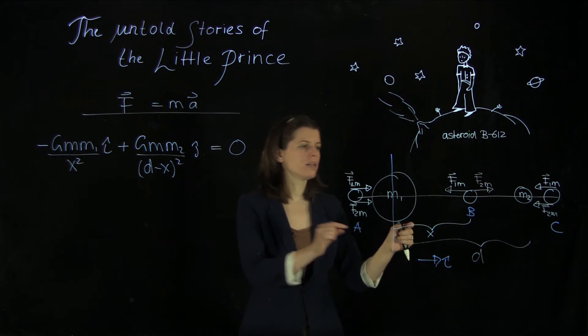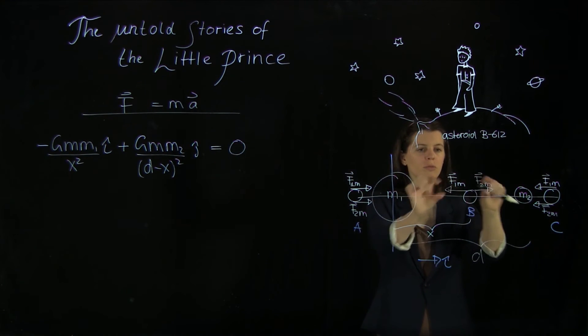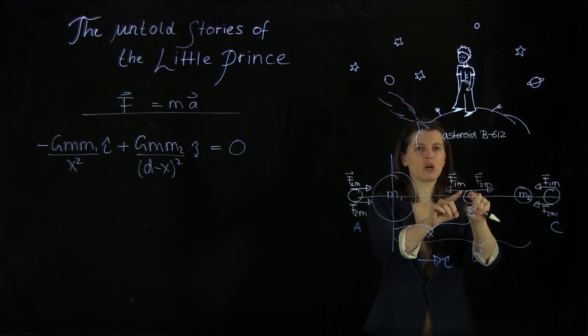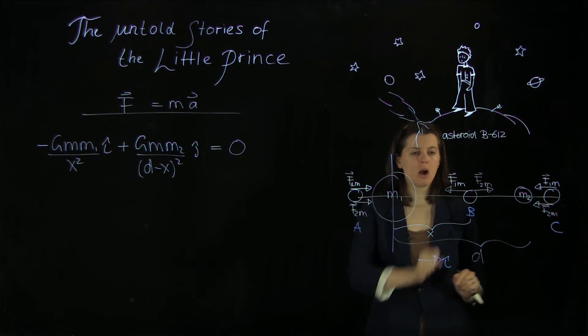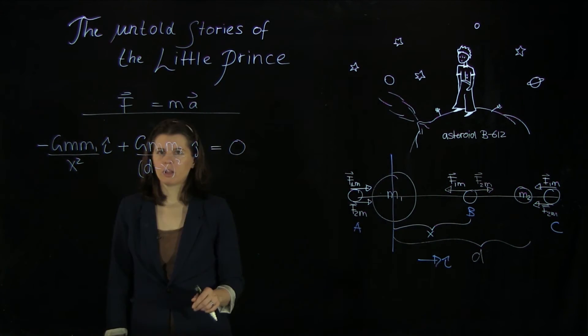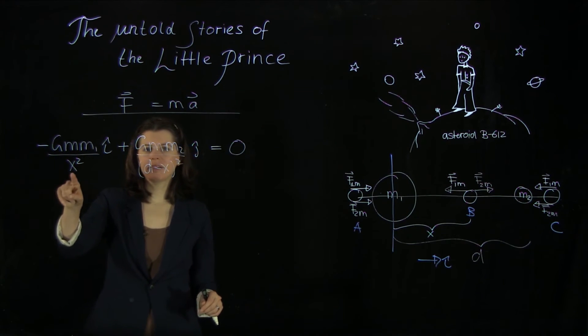Because that is what we want, right? We want this to, if it adds up to zero, then we have no gravitational forces acting on the asteroid. So now we need to solve this for x here.